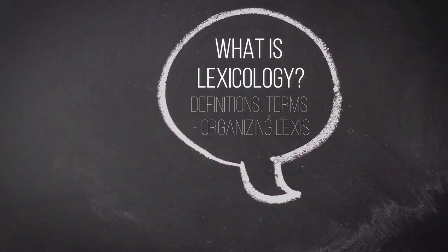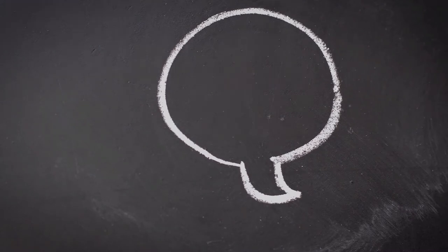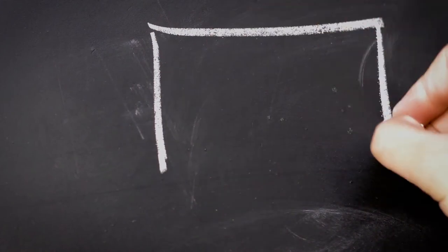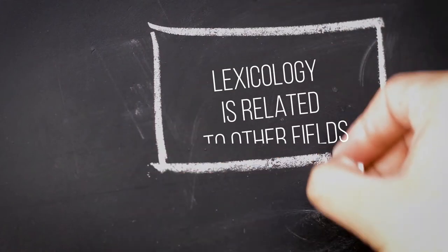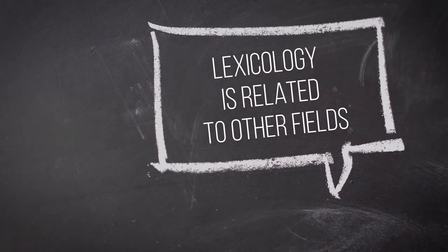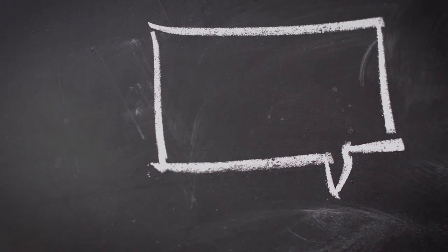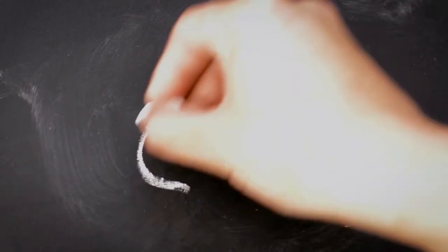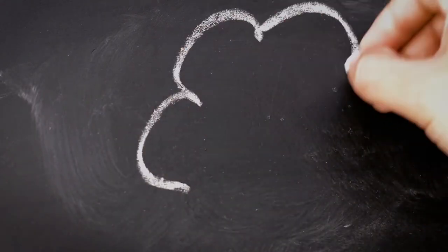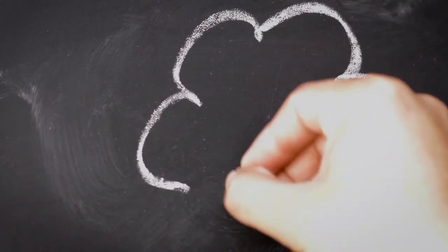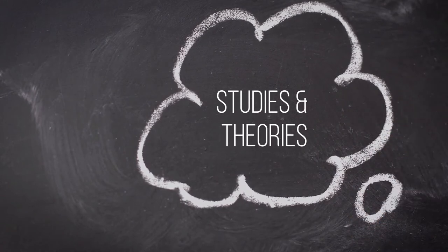What is lexicology? When we study words, we also look at their relations to other fields from different perspectives. Lexicology is related to morphology, semantics, etymology, and lexicography, because these fields also deal with words, according to Jackson and Amvella.